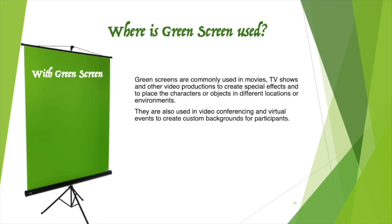Where is green screen used? Green screens are commonly used in movies, TV shows, and other video productions to create special effects and to place characters or objects in different locations or environments. They are also used in video conferencing and virtual events to create custom backgrounds for participants.